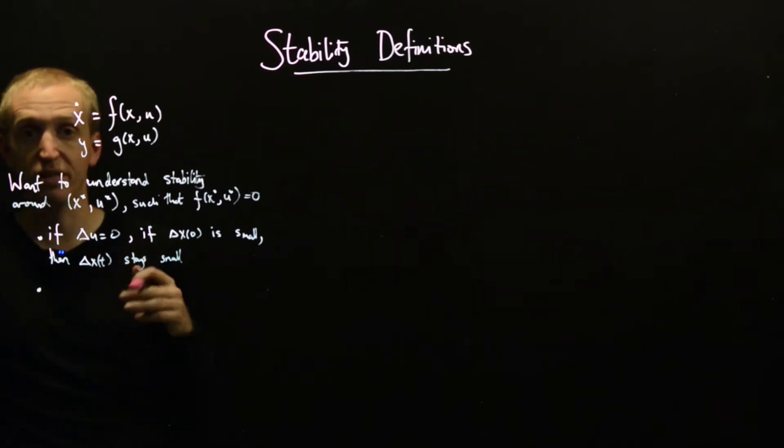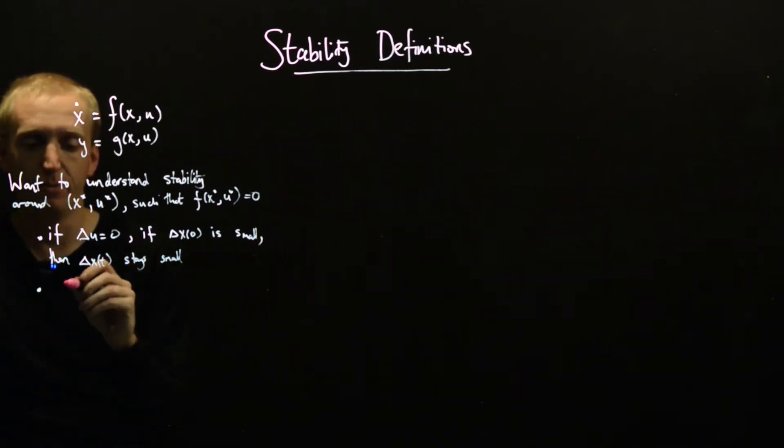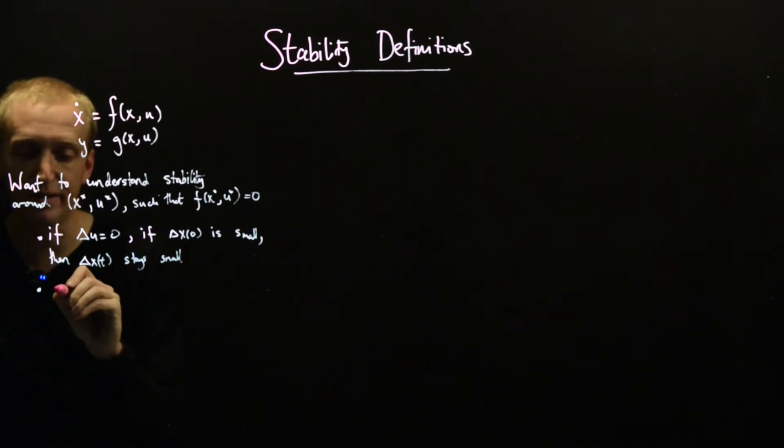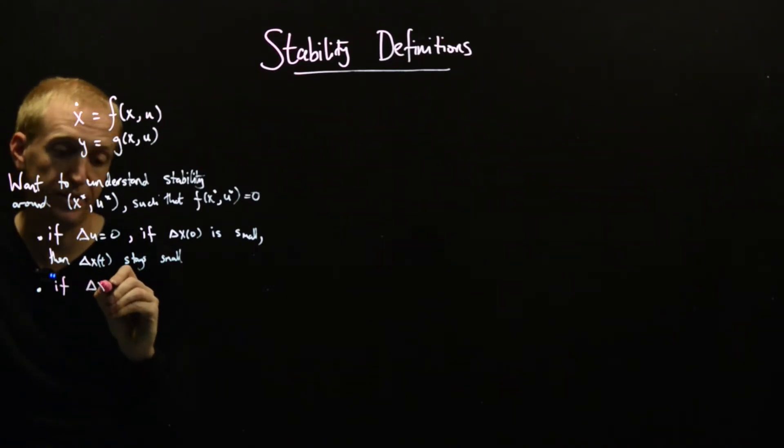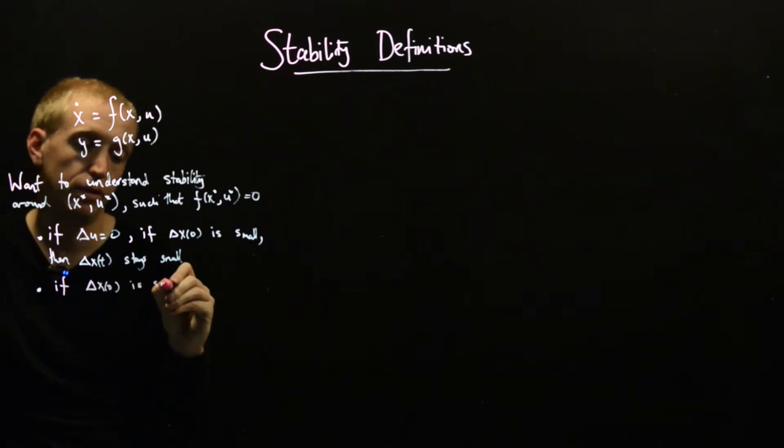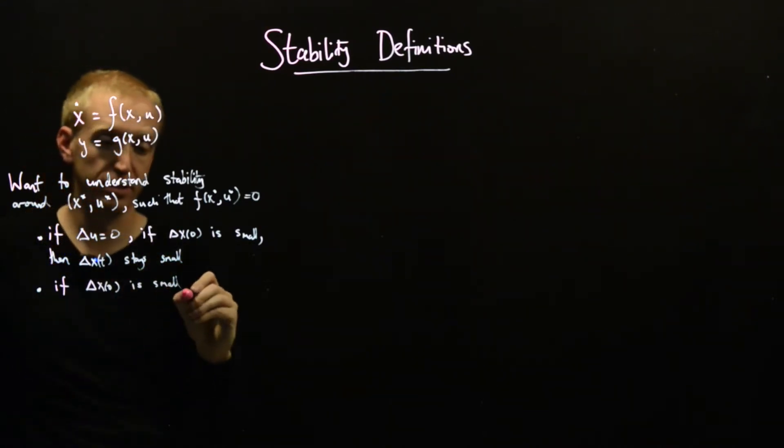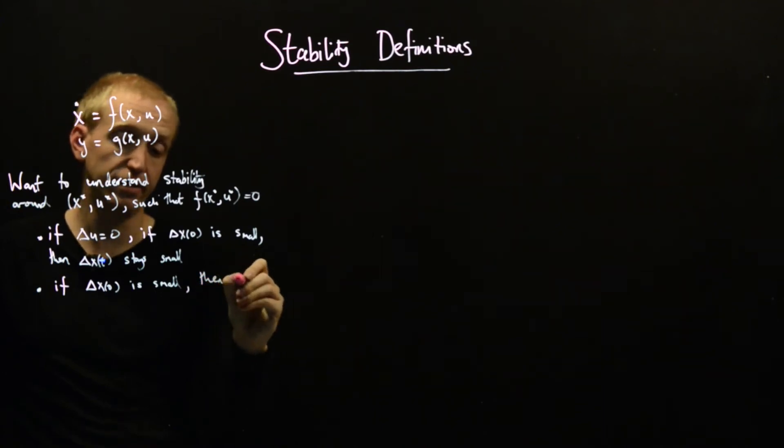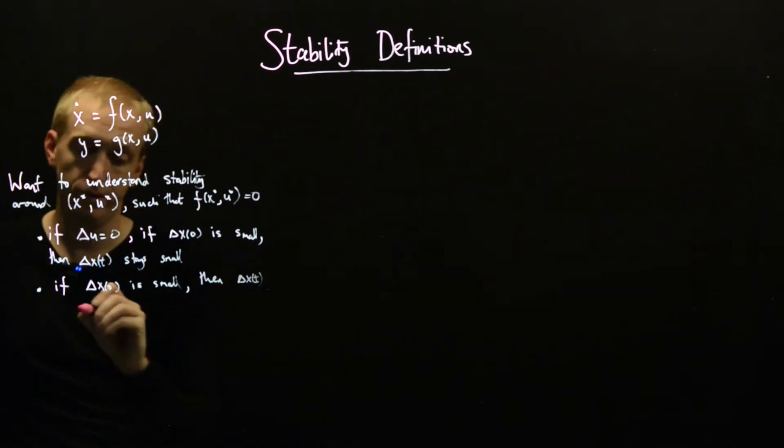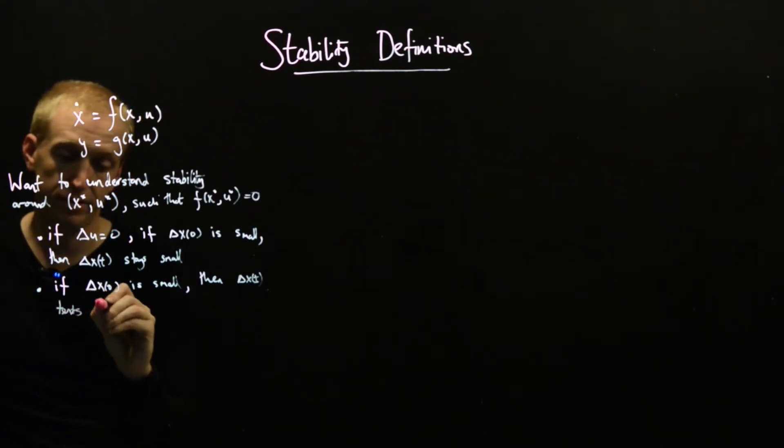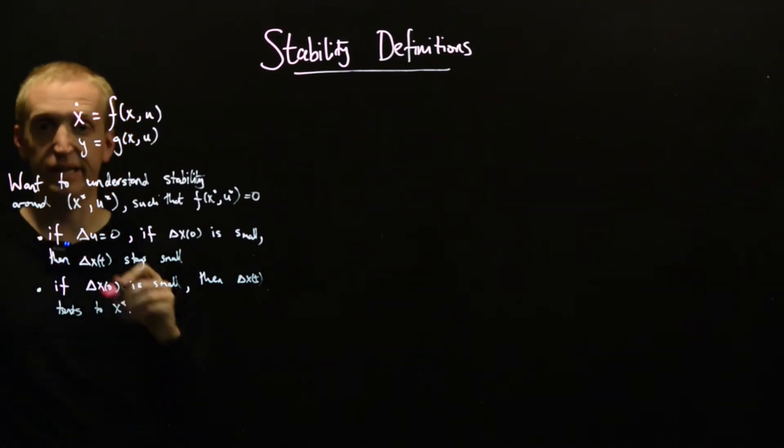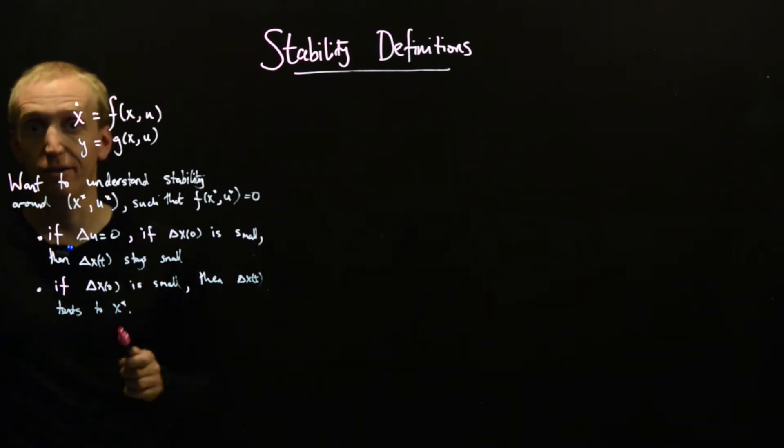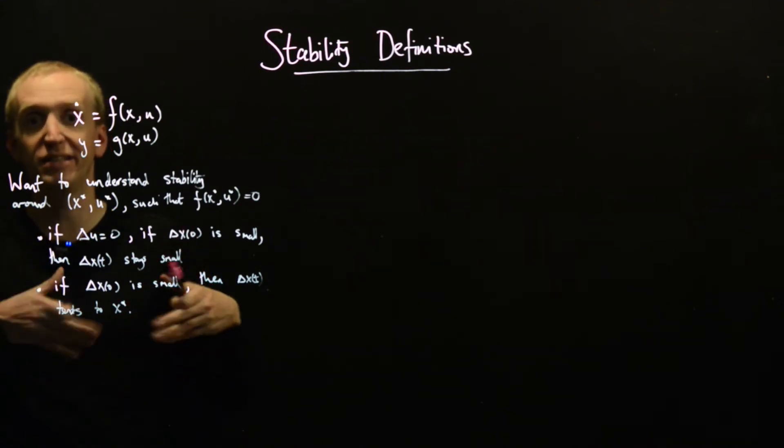It turns out for nonlinear systems a slightly better thing to ask for might be that if delta x of zero is small, and again, we don't apply any inputs, then delta x of t tends to x star. So this is saying something a little bit stronger. It's saying that if we start close, then we actually tend towards our equilibrium point x star. So this might be another desirable feature about stability of an equilibrium point.